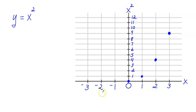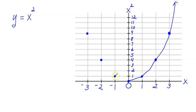And the negative values — let's do those real quick. Negative 1 squared is negative 1 times negative 1, which is just 1. Negative 2 squared is 4. And negative 3 squared is 9. So this looks like the letter U.